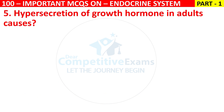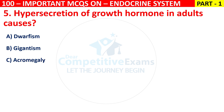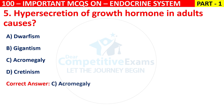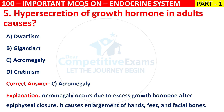Q5. Hypersecretion of growth hormone in adults causes: dwarfism, gigantism, acromegaly, or cretinism. The correct answer is C, that is acromegaly. Acromegaly occurs due to excess growth hormone after epiphyseal closure. It causes enlargement of hands, feet, and facial bones.